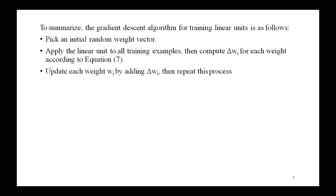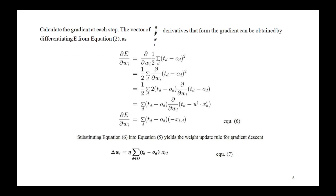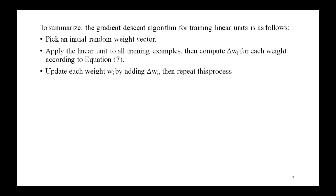To summarize the gradient descent algorithm for training linear units: first, pick an initial random weight vector; then apply the linear unit to all the training examples; then compute delta w-i for each weight according to the weight update equation; then update each weight w-i by adding delta w-i; and repeat this process.